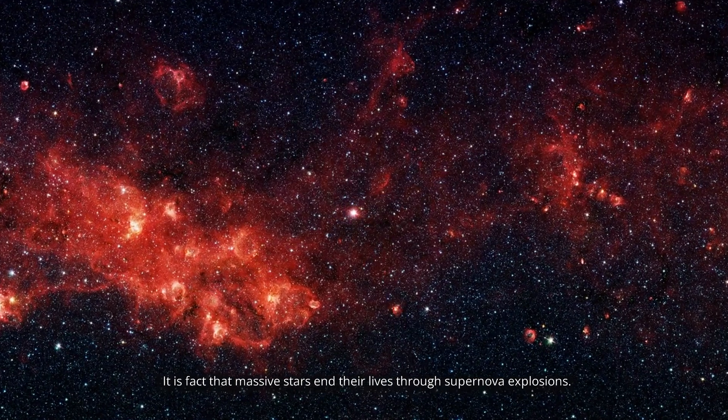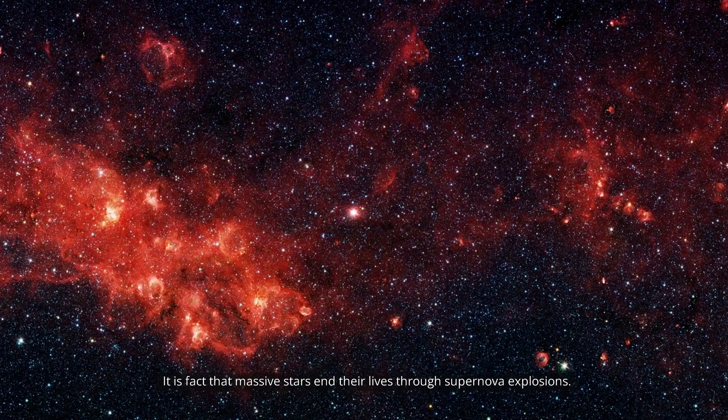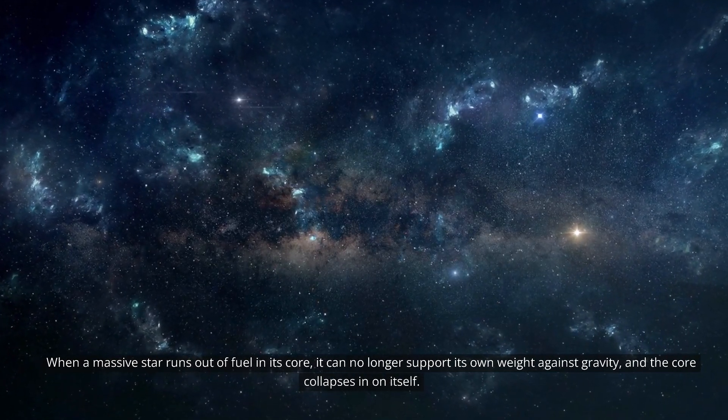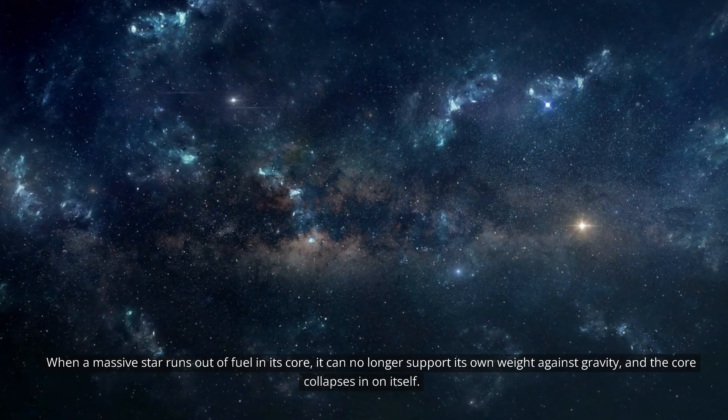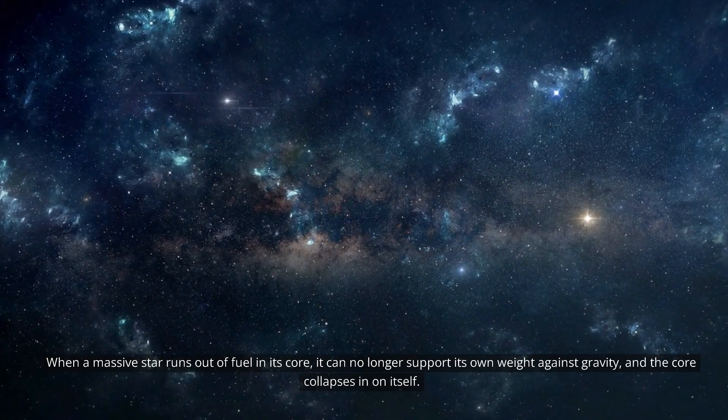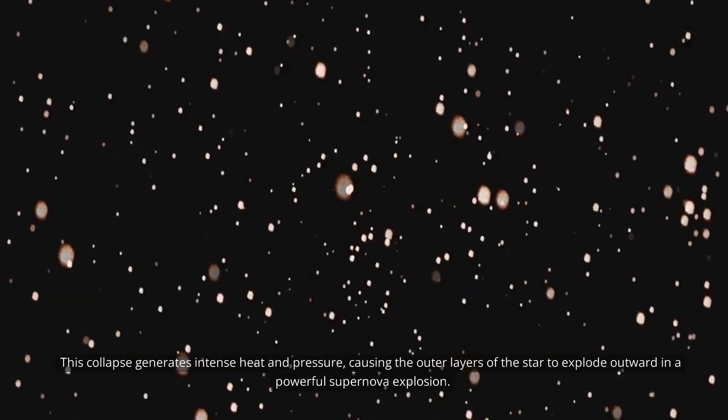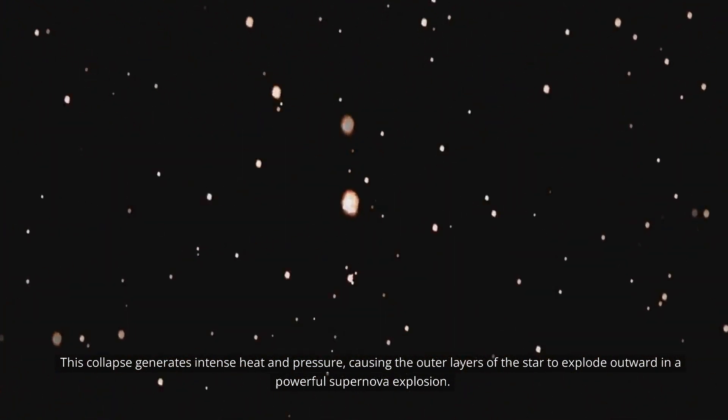It is fact that massive stars end their lives through supernova explosions. When a massive star runs out of fuel in its core, it can no longer support its own weight against gravity, and the core collapses in on itself. This collapse generates intense heat and pressure, causing the outer layers of the star to explode outward in a powerful supernova explosion.